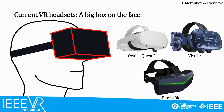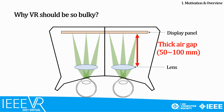Most VR devices have a form of a big headset. Therefore, VR users look like putting a big box on their face, which nobody would want. Also, too far center of mass from the head prevents us from using VR for a long time. Then why do the VR devices have to be so bulky? Ironically, most volume of the VR devices is occupied by the air. This thick air gap between the display panel and the lens is only necessary to secure the optical path length. In usual cases, the thickness of the air gap is around 50 to 100 mm.